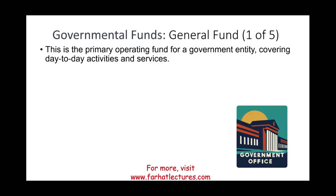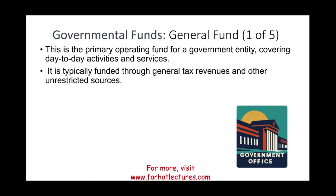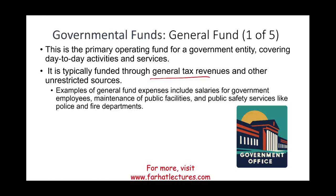Now, how do they generate revenue? They get revenue through general taxes — basically taxing people through various types of taxes like property and sales taxes — and through other unrestricted resources, meaning somebody giving you the money. Examples of general fund expenditures include salaries for government employees and maintenance of public facilities.